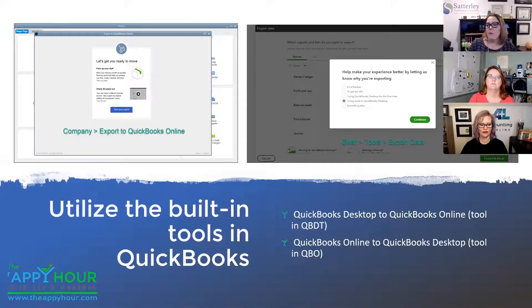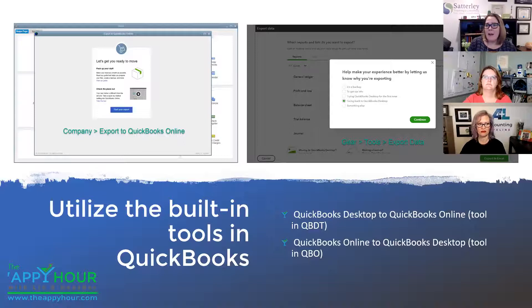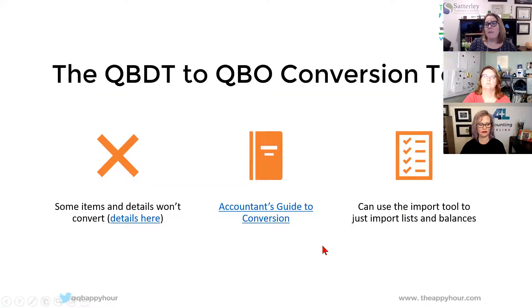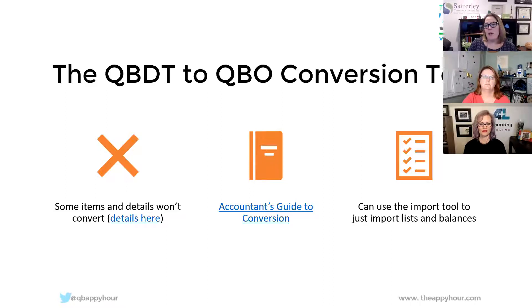So if you don't want to bring over any transactions — maybe a client has 20 years of garbage transactions but their customer and vendor lists are good — you can actually just do a conversion to bring the settings and those lists over. To get to the built-in conversion tools in QuickBooks Desktop, go to the Company menu and then Export to QuickBooks Online. I don't recommend you do it today because as of yesterday it was not working very well. You can also still convert from QuickBooks Online to QuickBooks Desktop — for a while they were saying you can't, but you can.